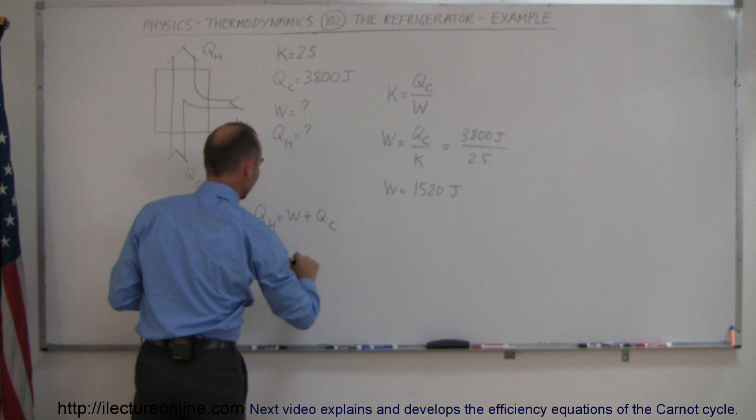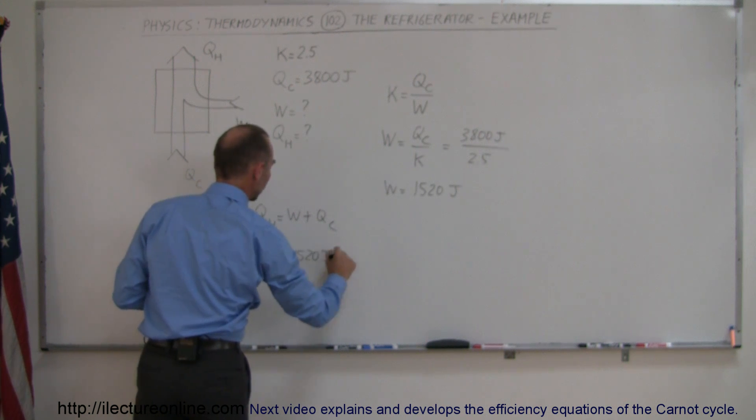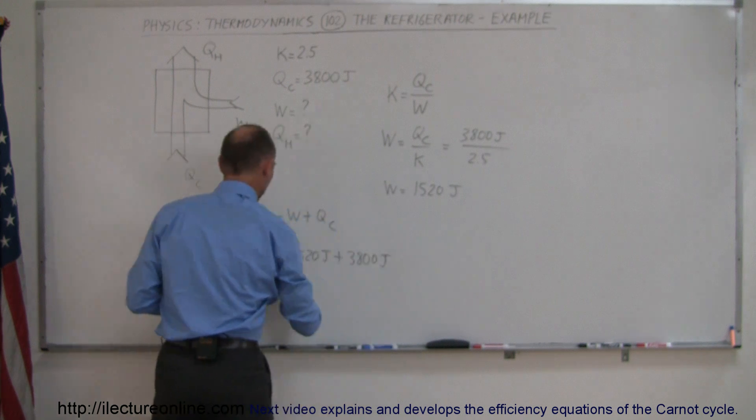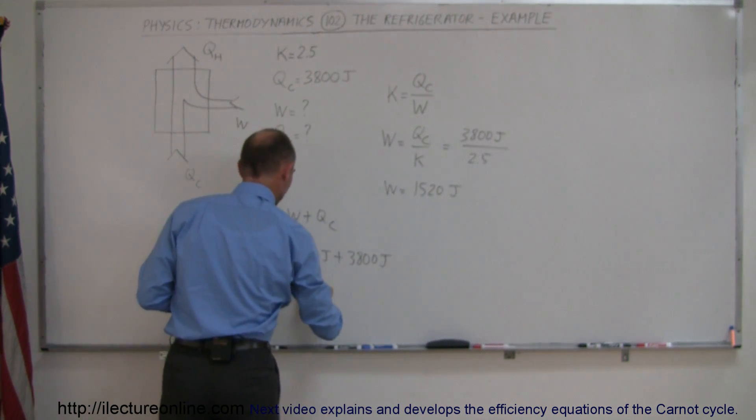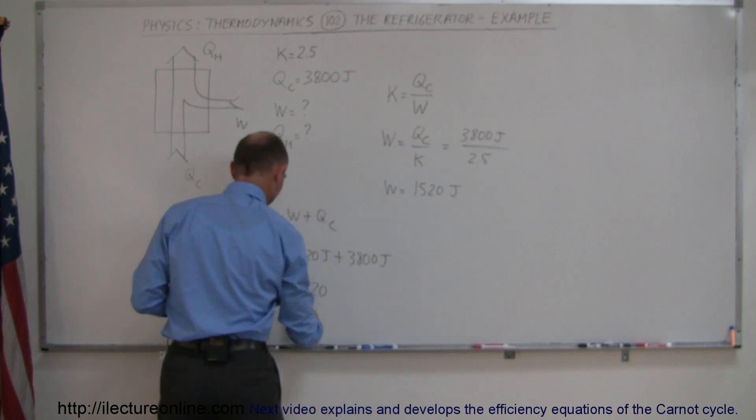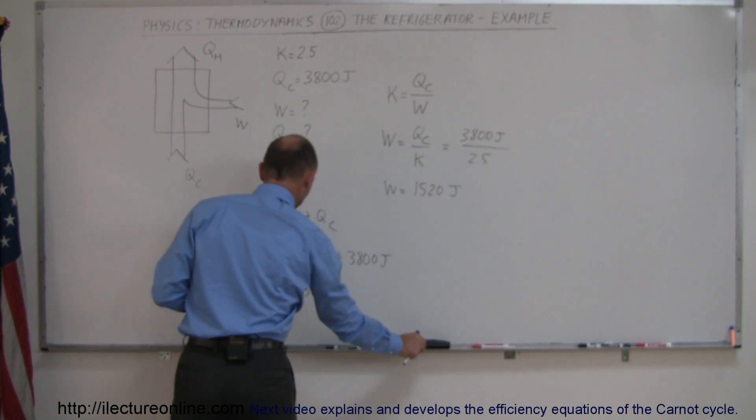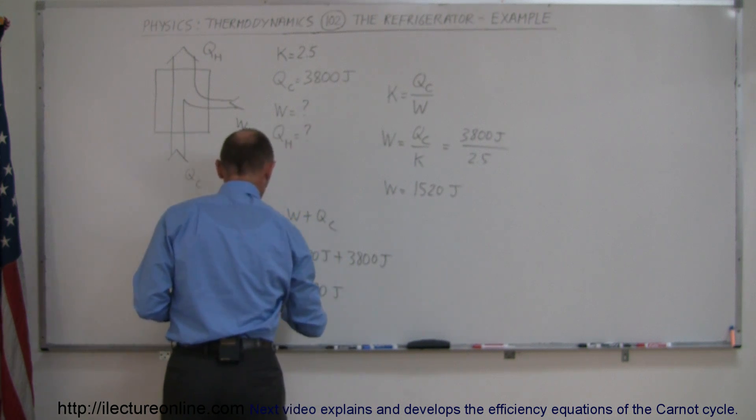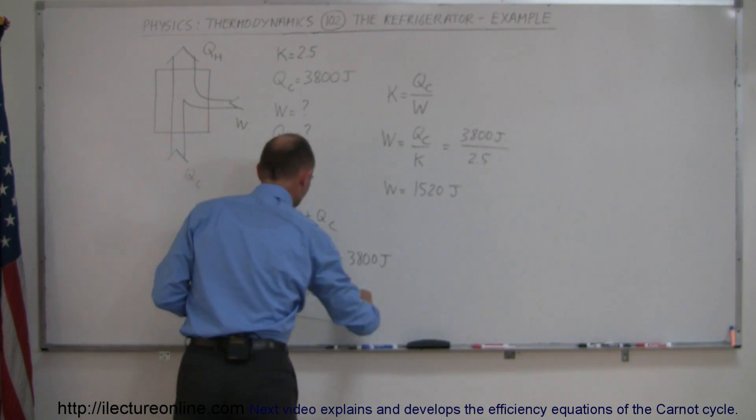This equals 1,520 joules plus 3,800 joules, which is 5,320 joules—the heat expelled to the environment.